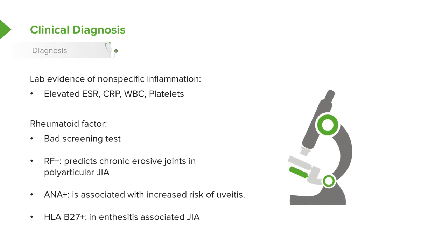The HLA-B27 type increases risk for enthesitis in patients with enthesitis-associated JIA. So that would be a marker for enthesitis-associated JIA, but HLA typing is not commonly done in these patients.